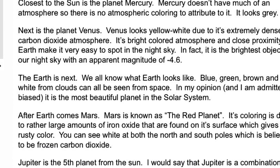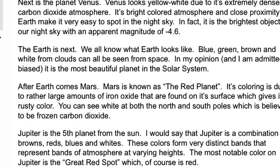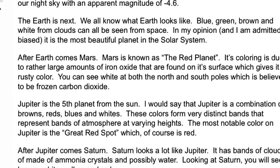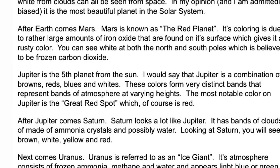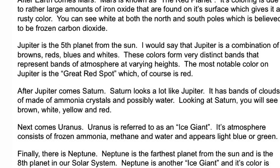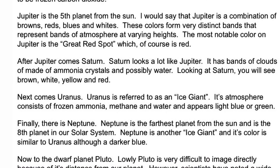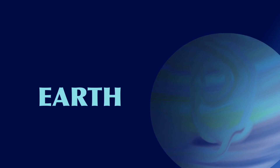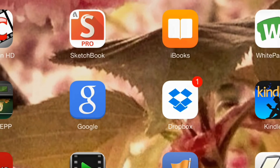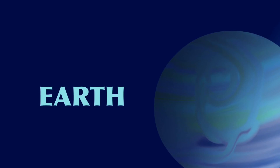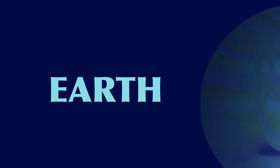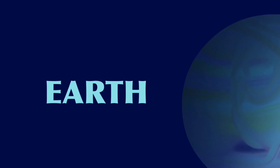Our first plan of action was to have students get together and create models of every planet in the solar system and a model of the sun. Then they were going to use these models to calculate the distance of each planet from the sun and to create an actual physical model to show the relative size of the solar system. To create the planet models, we used two iPad apps. The first one was called Sketchbook Pro, and the second one was called PS Touch, or Photoshop Touch. Today we're going to be making planets and then saving them to a Dropbox to be used in a later lesson on the solar system.